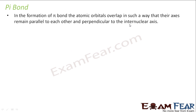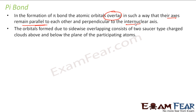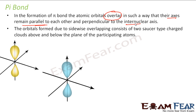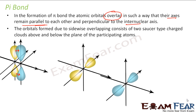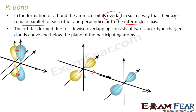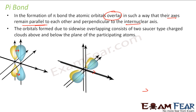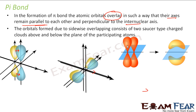Now we will discuss pi bond. In pi bond, the overlap is such that the axes remain parallel to each other, and these axes are perpendicular to the internuclear axis. If you see here, there are two P orbitals combining — not head-on, but side to side. There is an overlap and their axes are always parallel. The way they overlap, it forms a saucer-like cloud.